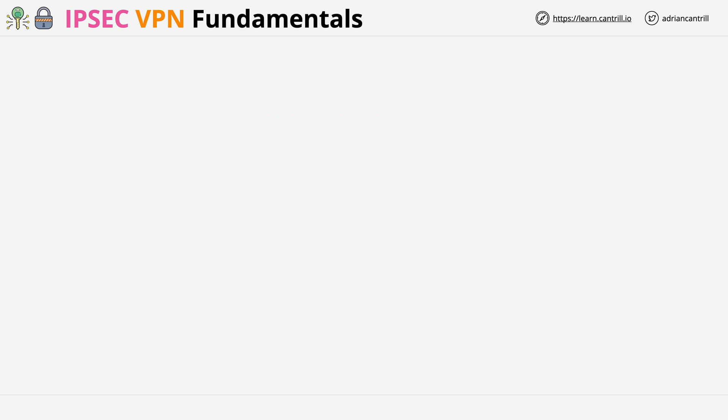IPsec has two main phases. If you work with VPNs, you're going to hear a lot about phase one and phase two. There are two phases in setting up a given VPN connection. The first is known as IKE Phase 1. IKE, or Internet Key Exchange, as the name suggests, is a protocol for how keys are exchanged — in this context, within a VPN.